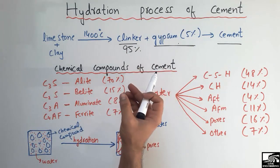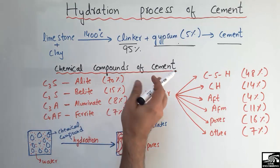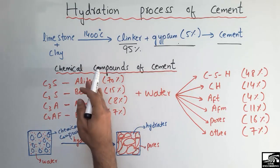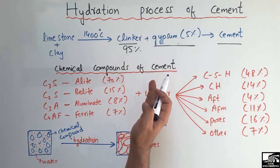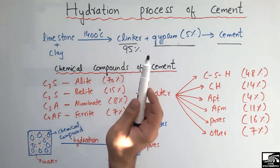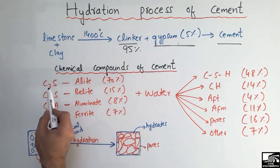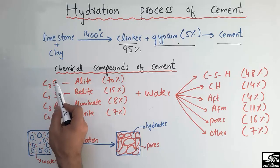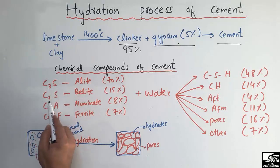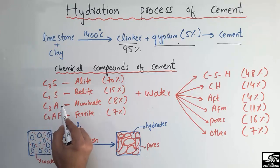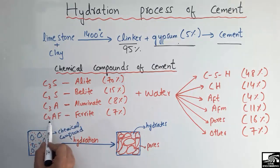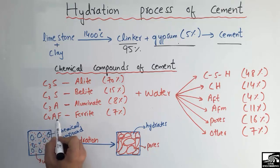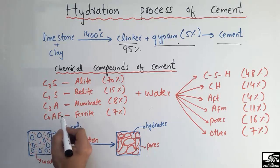There are different chemical compounds of cement after manufacturing, and these chemical compounds are responsible for the strength of cement. The four main chemical compounds are: C3S (tricalcium silicate), C2S (dicalcium silicate), C3A (tricalcium aluminate), and C4AF (tetracalcium aluminoferrite).